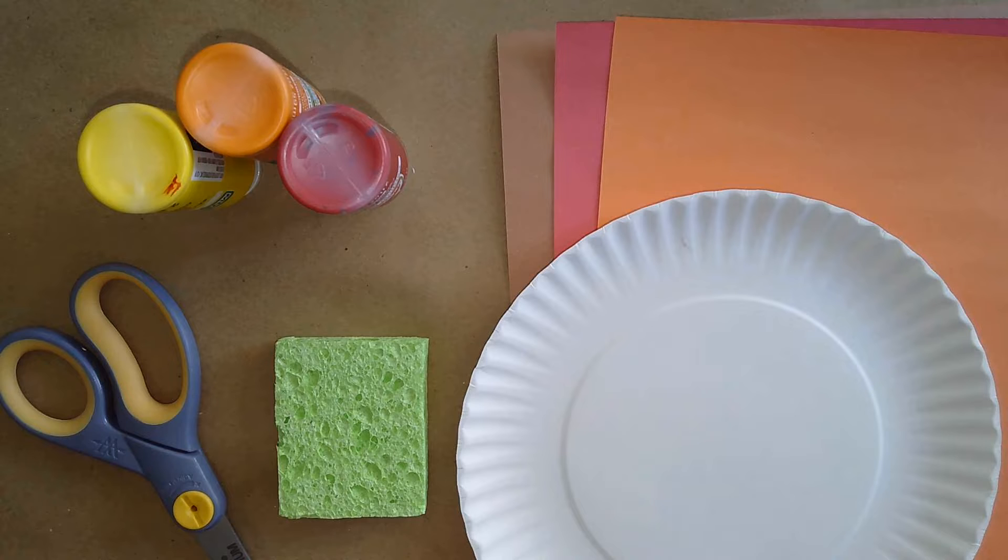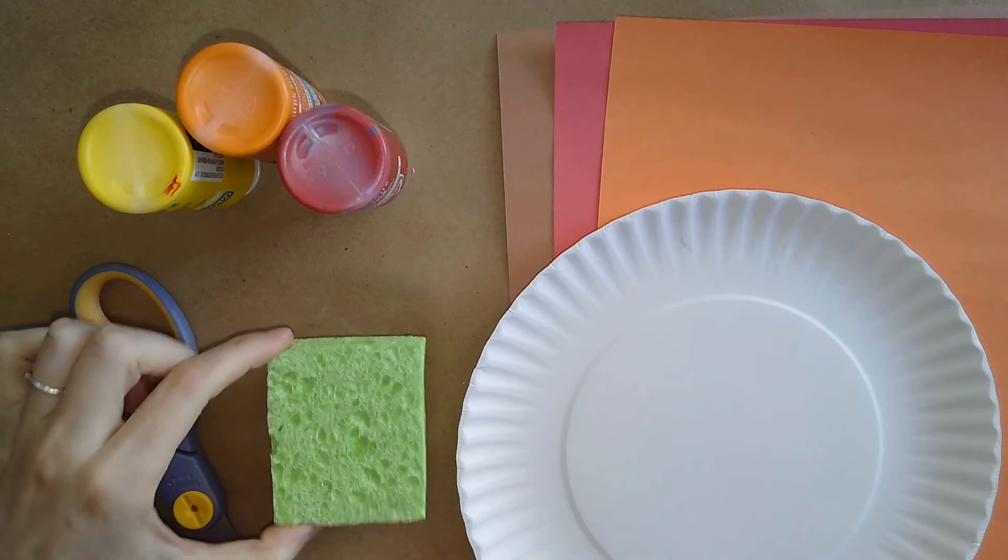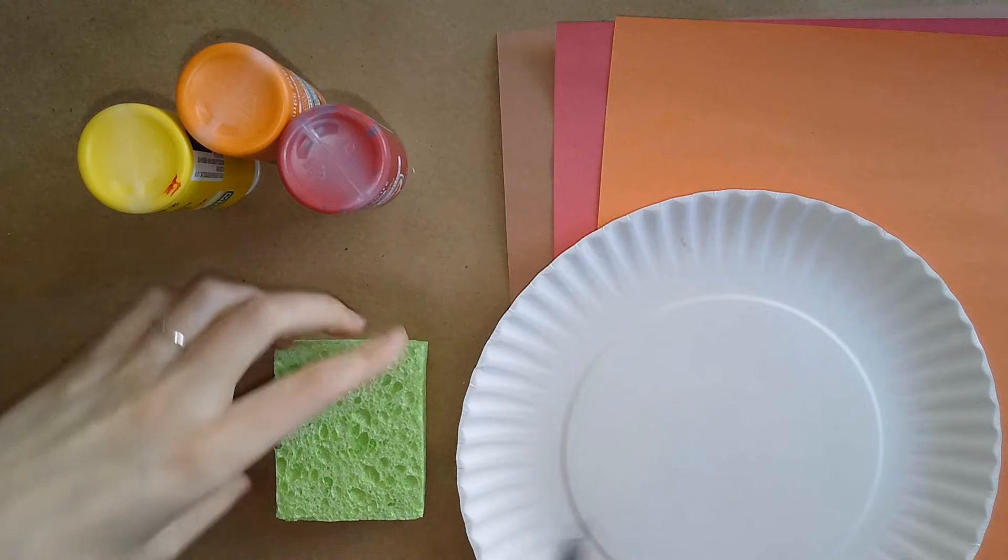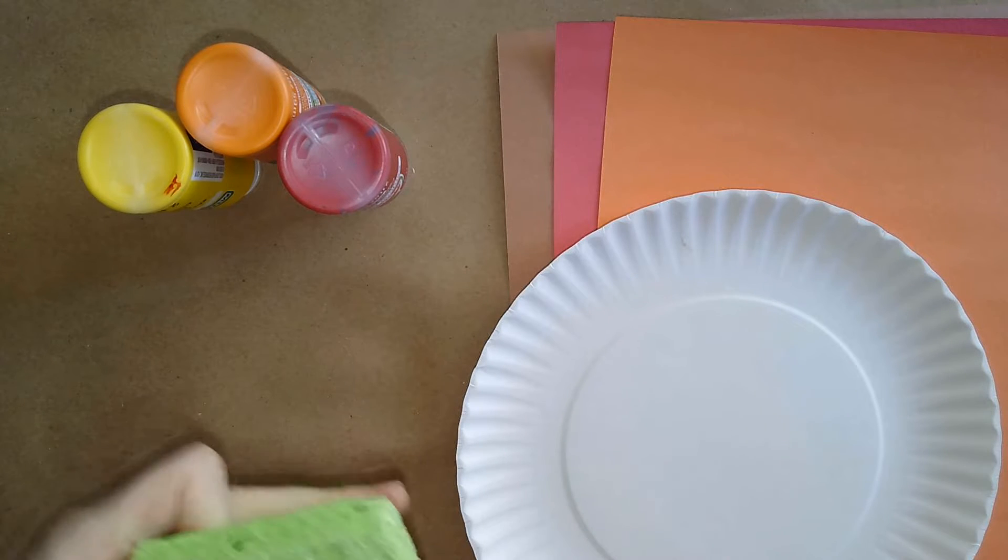Now your very first step will be to cut a sponge into three pieces. We'll take our scissors and just cut this.